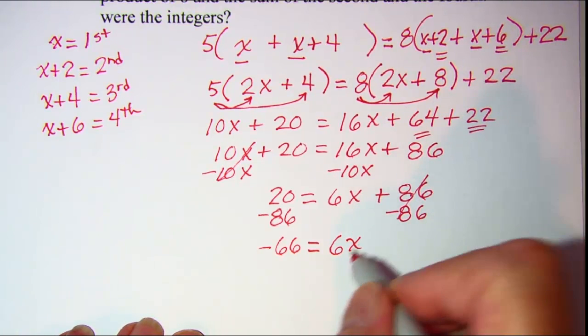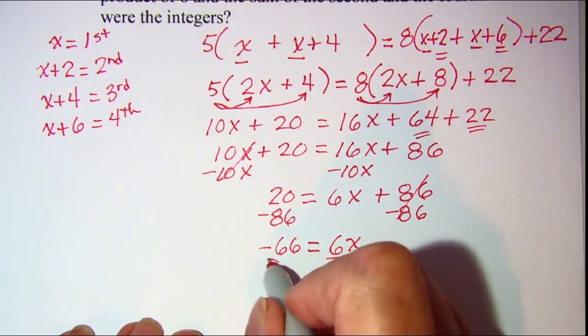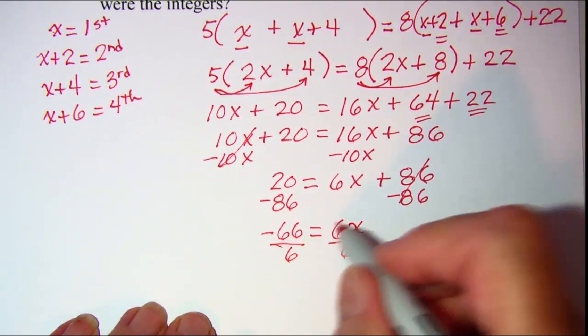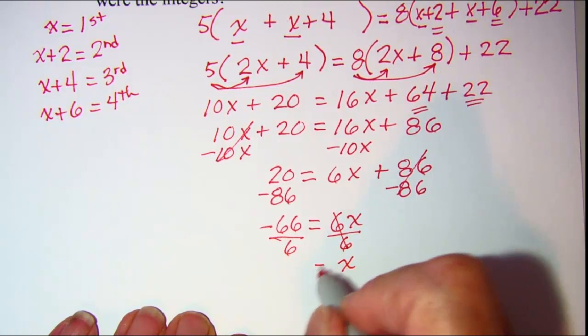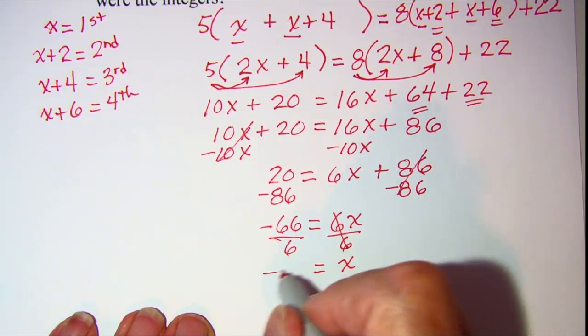Divide both sides by 6. It cancels and I have x is equal to a negative 11.